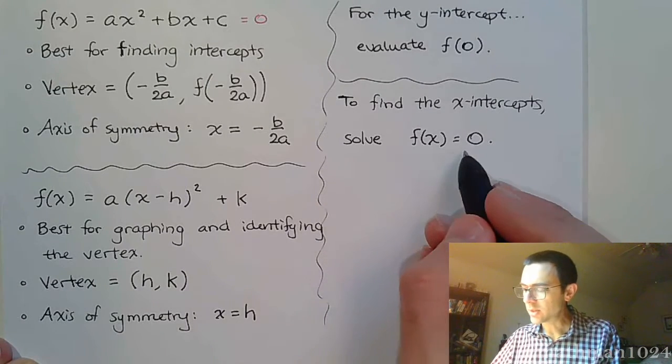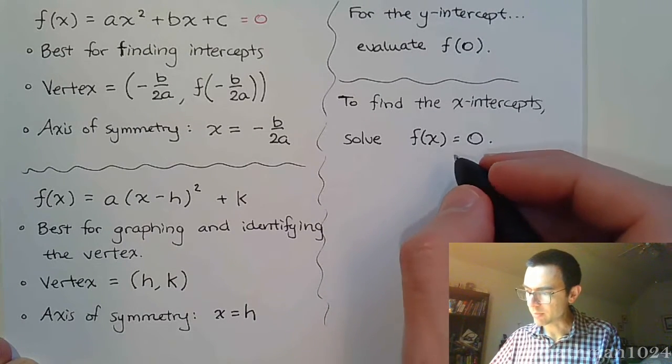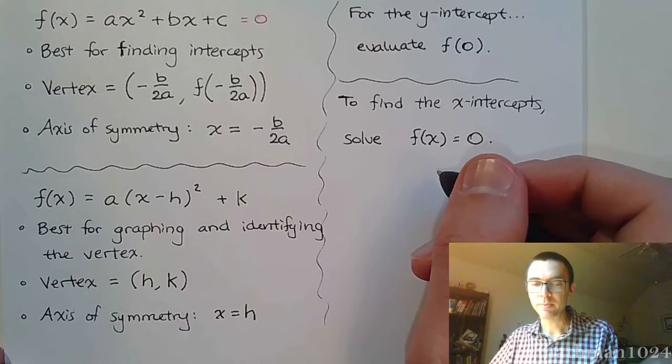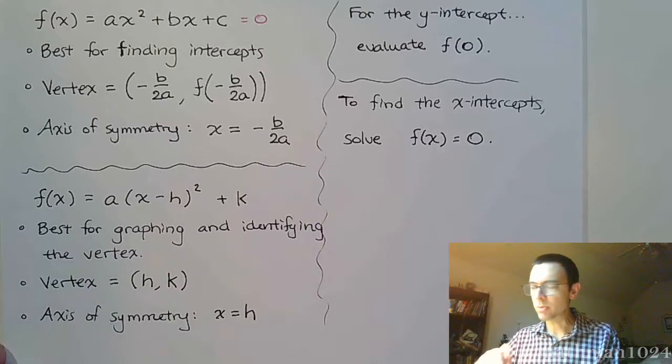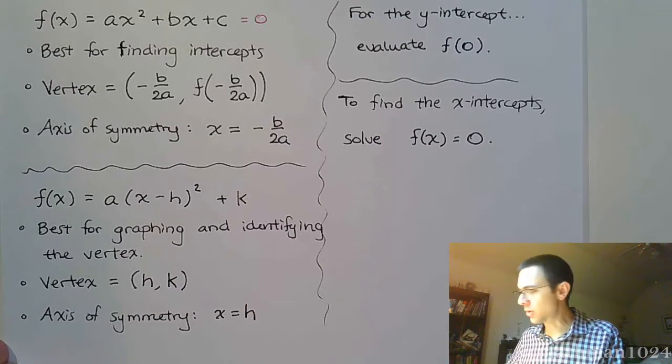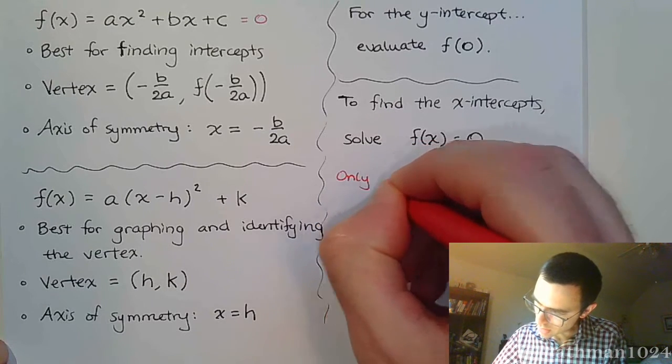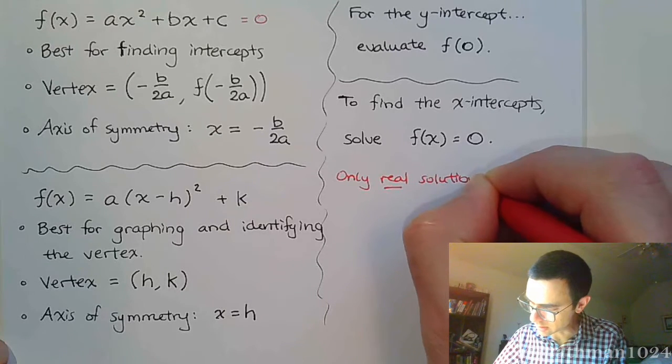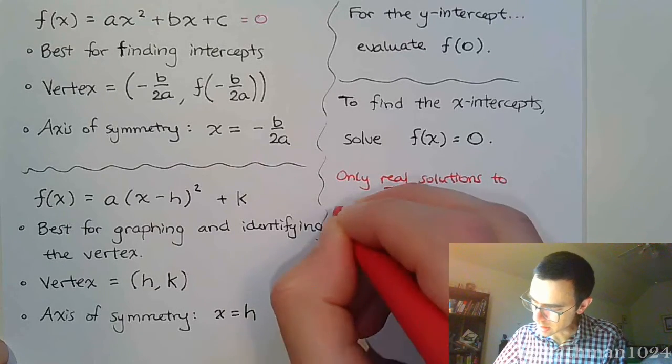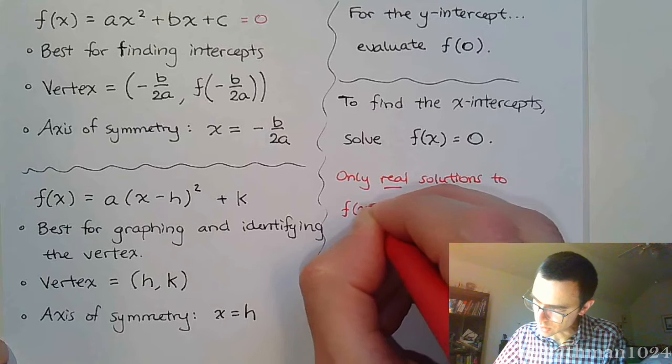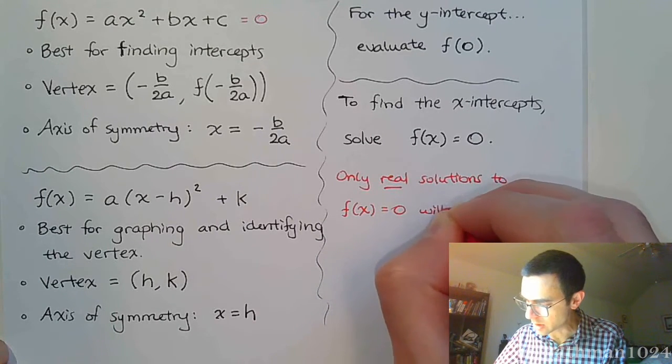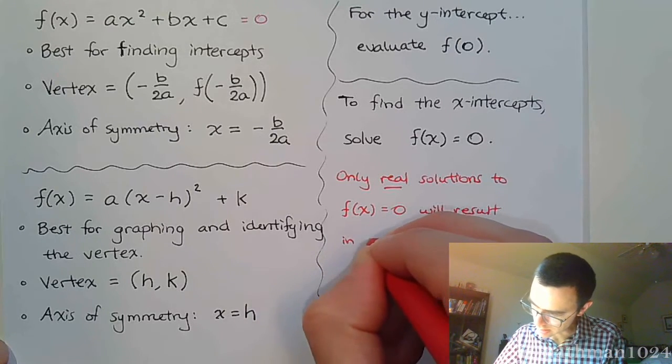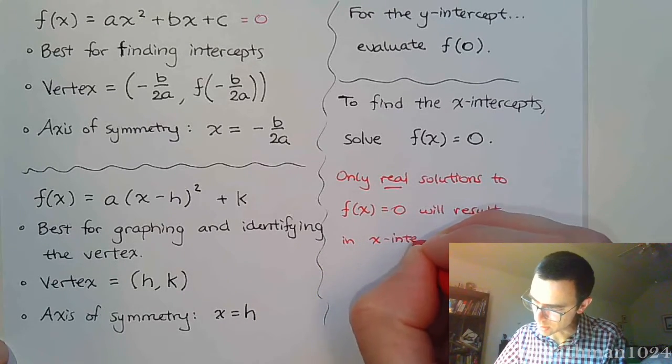So you solve this f(x) equal to 0 and as long as those values are real, then you have x-intercepts. So make sure that you understand. Let's make a big note of this. Only real solutions, only real solutions to setting f(x) equal to 0 will result in x-intercepts.